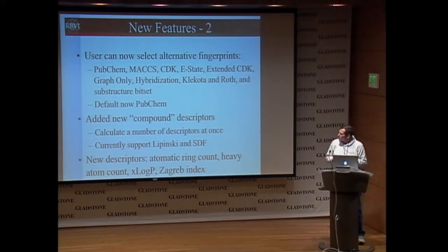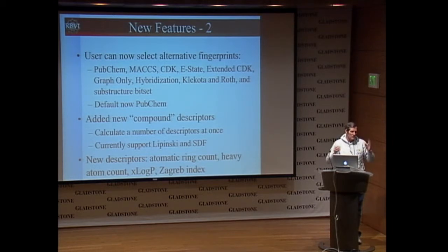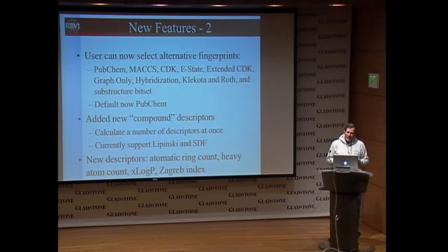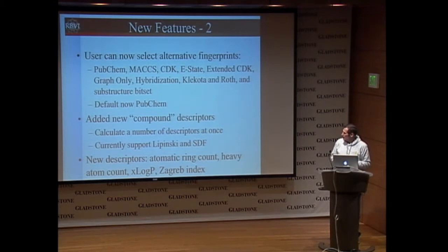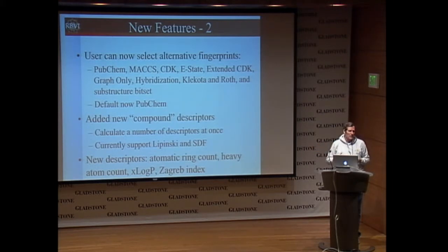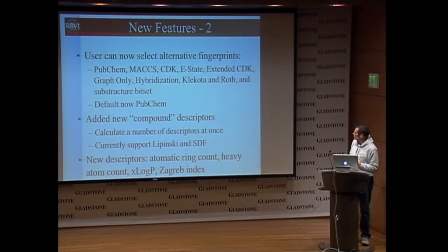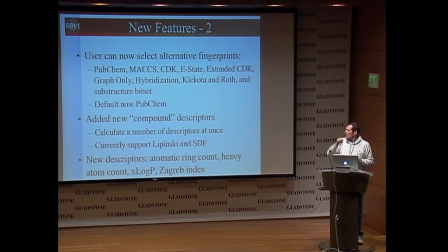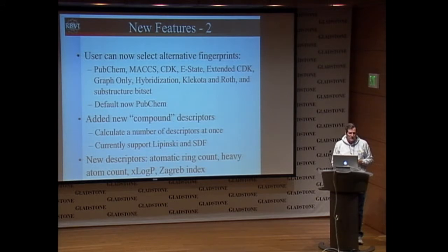I found out from internal users that fingerprints in cheminformatics really matter — there are many to choose from and every user has their favorite. Rather than try to figure out which is best, I added the capability for the user to choose. I switched from the CDK to PubChem fingerprints since most people are familiar with those. I also added a bunch of new compound descriptors where you can say give me all the Lipinski descriptors or all the SDF descriptors, and it calculates a whole set at once.